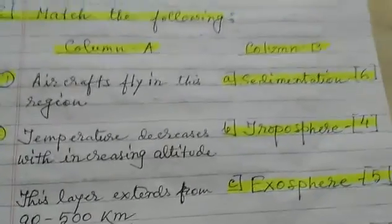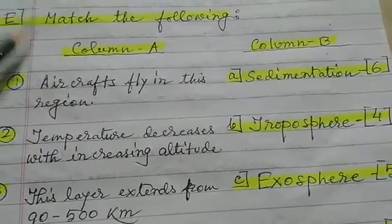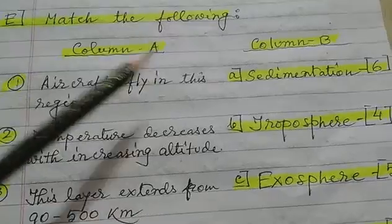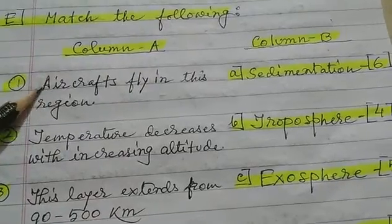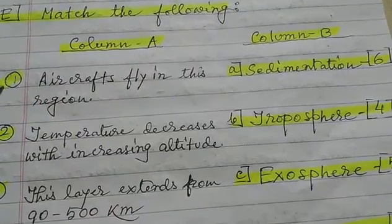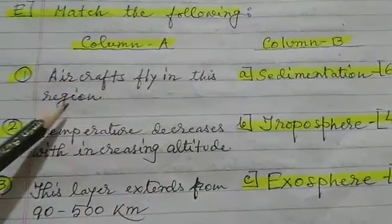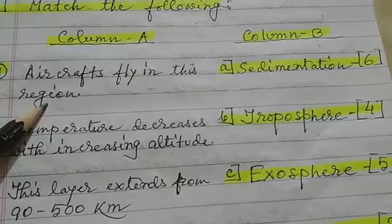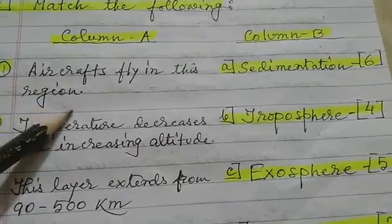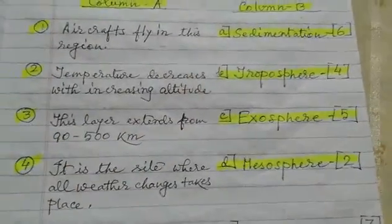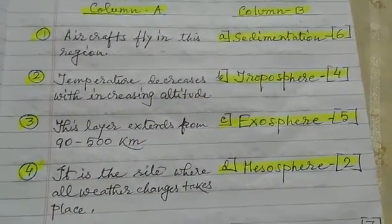Next type of question is match the following, column A and column B. Number 1: aircrafts fly in this region — the correct answer is stratosphere. Number 2: temperature decreases with increasing altitude — the correct answer is mesosphere.